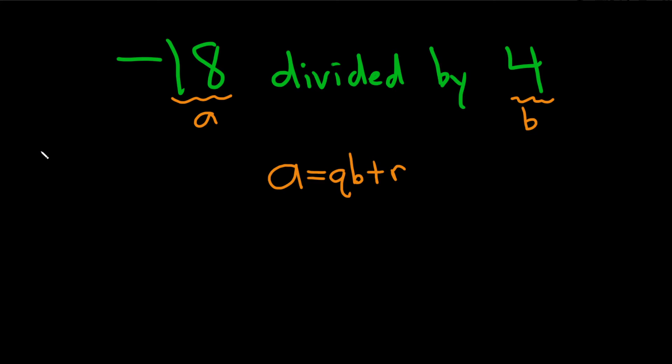So the next step now is to actually perform the division. So negative 18 divided by 4. I'm going to put this in my calculator, negative 18 divided by 4, and I got negative 4.5. And this is probably the trickiest part, because now you want to round down, always round down.